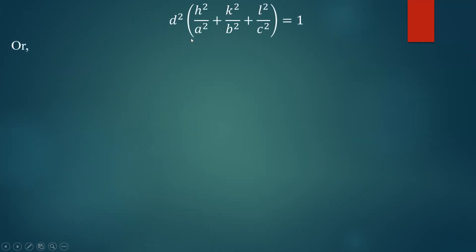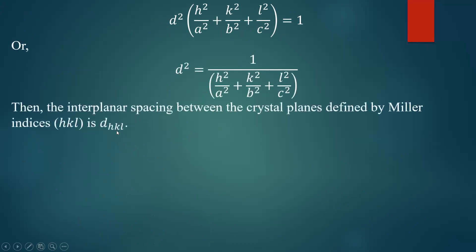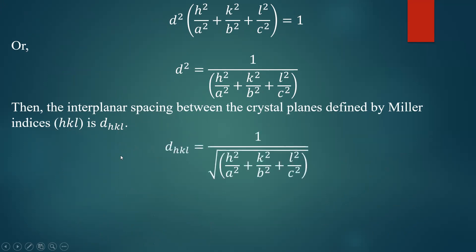Taking the square root of both sides, the interplanar spacing D_HKL between crystal planes defined by Miller indices HKL is: D_HKL = 1 / √(H²/a² + K²/b² + L²/c²). This is the general formula for interplanar spacing in terms of Miller indices, valid for all seven crystal systems.